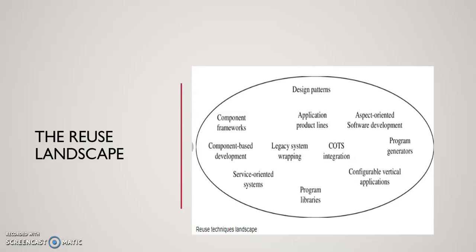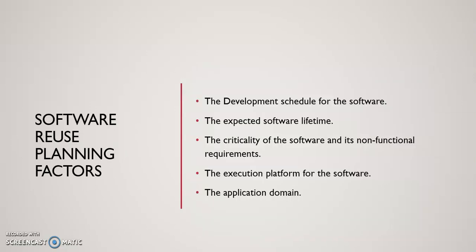We also have the reuse landscape. Many techniques have been developed to support software reuse, recognizing that systems in the same application domain are similar and have potential for reuse, and that reuse is possible at different levels — from simple functions to complete applications. The reuse landscape provides component frameworks, application product lines, legacy system wrapping, and service-oriented systems, all helping to build more refined systems using reuse code or applications.